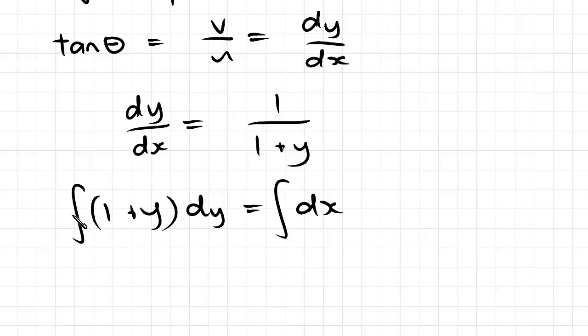integrating both sides and simplifying, we'll get a final equation of y squared over 2 plus y plus the constant of integration,